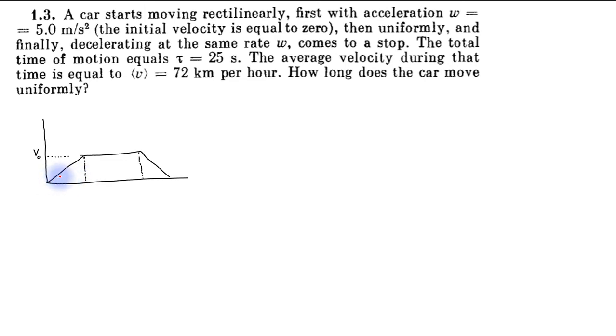First there is uniform acceleration, so the velocity will increase to maximum value, say v₀. Then the velocity remains constant, and finally the particle decelerates at the same rate to come to rest.